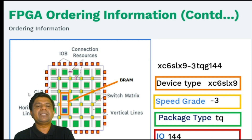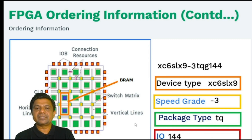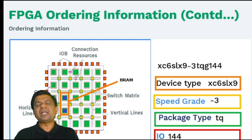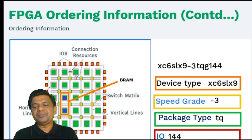You can order this FPGA for your design, product, or project work — or you can purchase a Spartan 6 board and download Xilinx ISE 14.7, providing a very low-cost solution for design validation, testing in the field, or research and development.